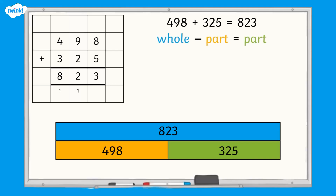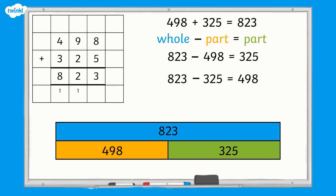Whole subtract part equals part. The whole is 823, one part is 498, and the other part is 325. So our inverse calculation is 823 subtract 498 equals 325. Remember, it could also be 823 subtract 325 equals 498.